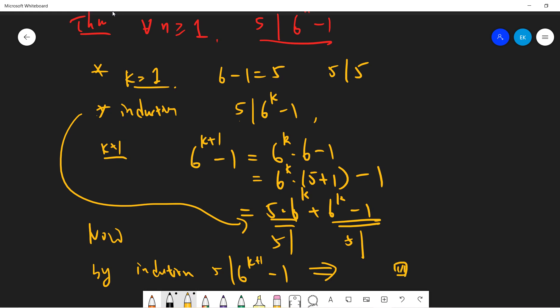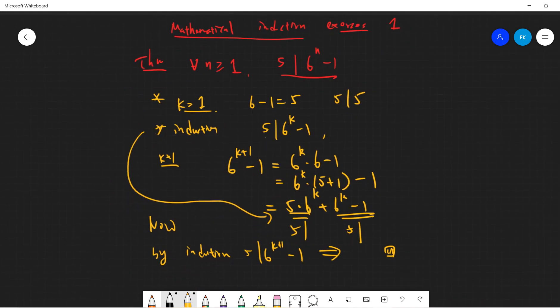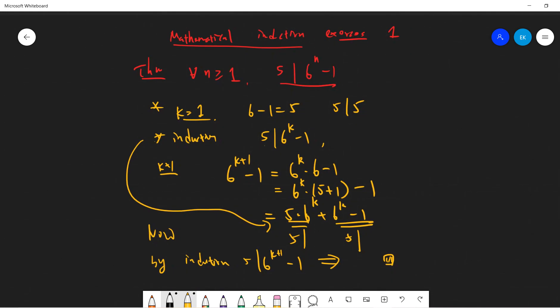So that will prove it. This is just a very easy exercise one to prove that 6 to the n minus 1 is divisible by 5.